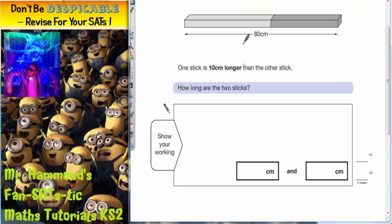So what we're looking for is two numbers that add up to 80. So they must add to 80, but where one of the numbers is 10 more than the other. So one number 10 more than the other.